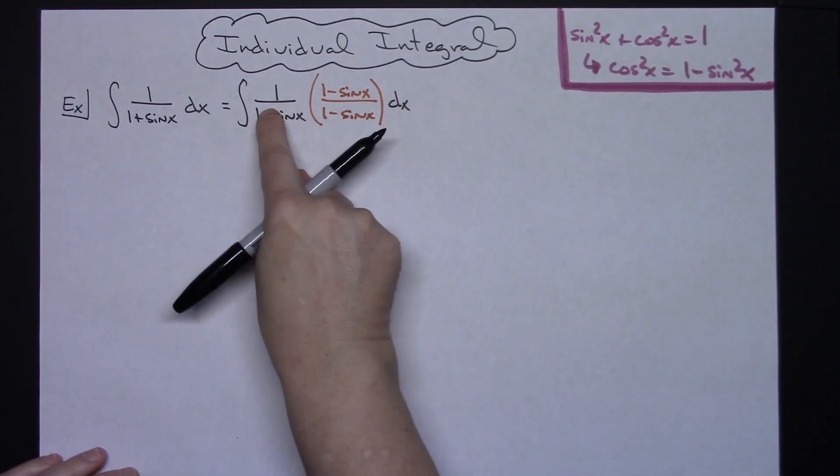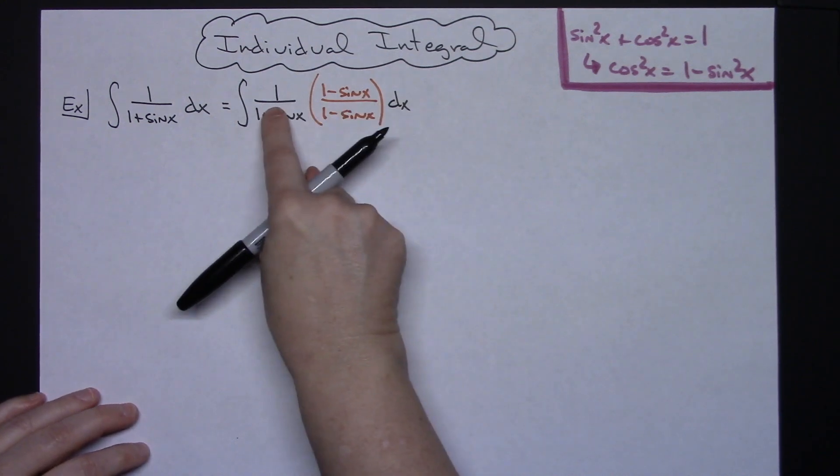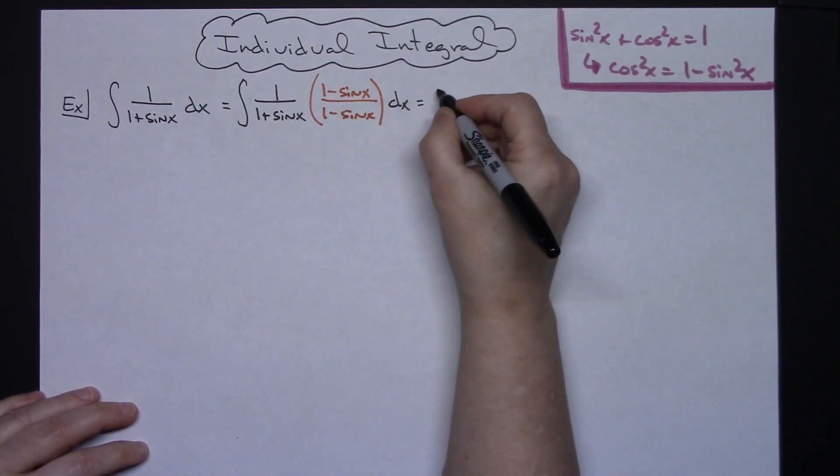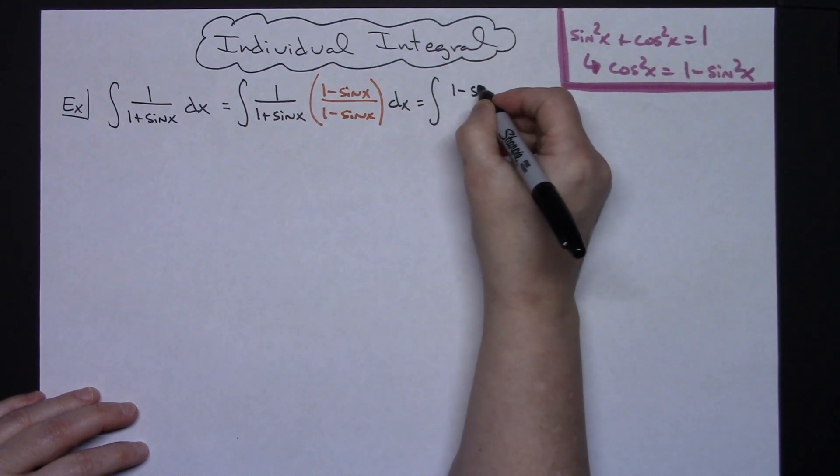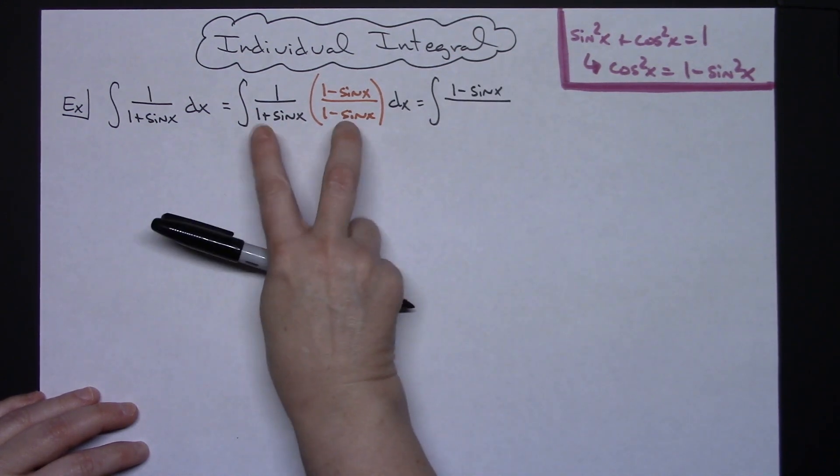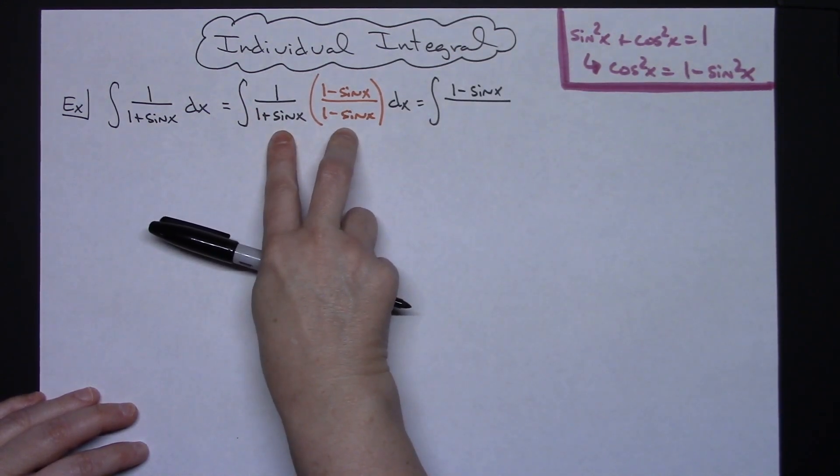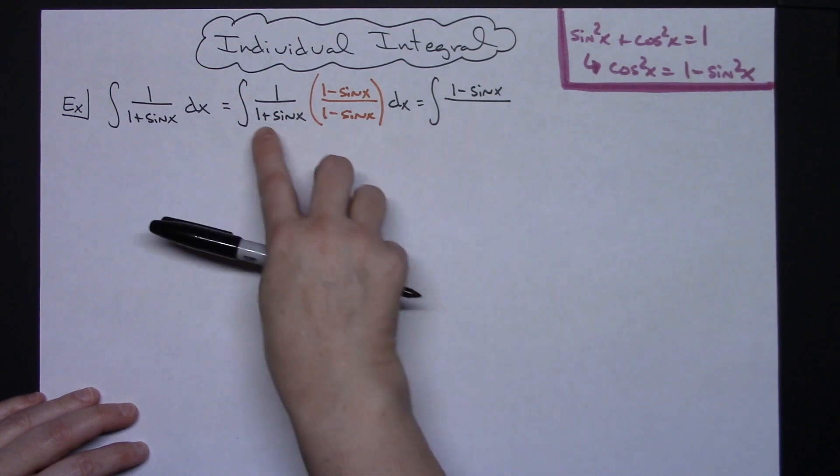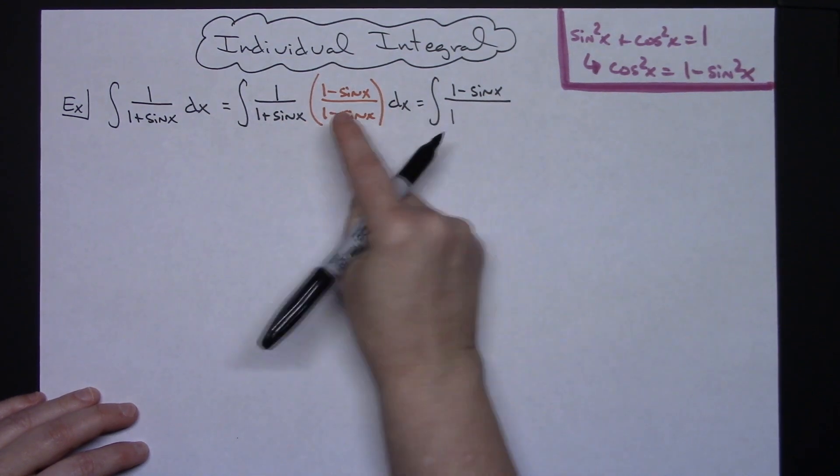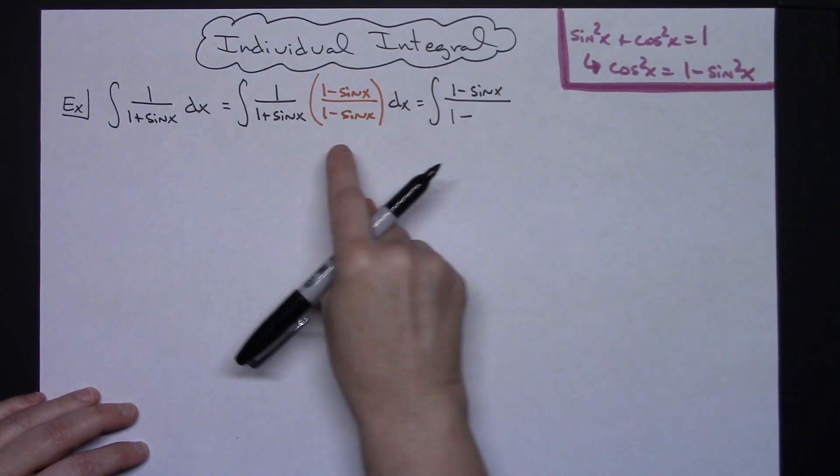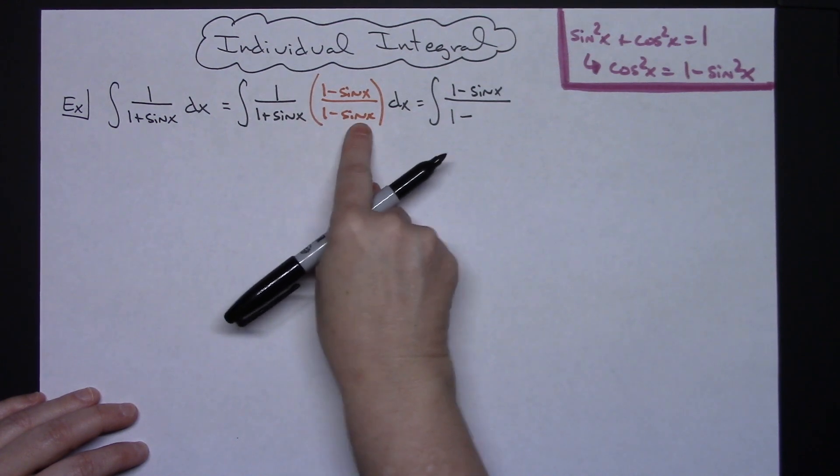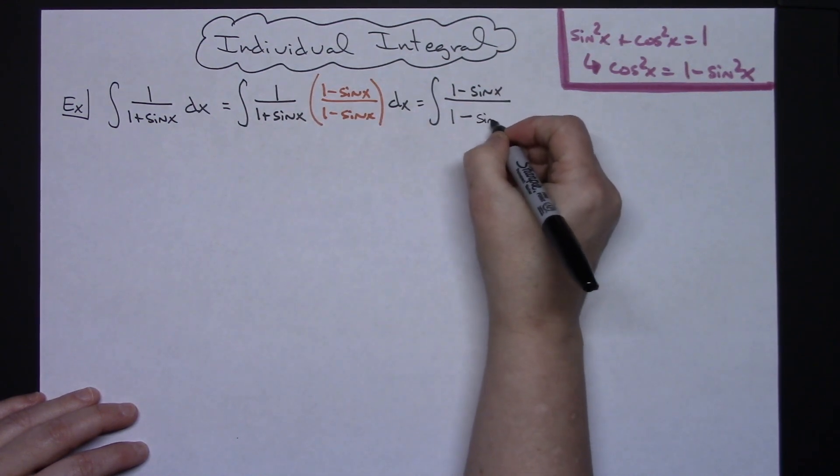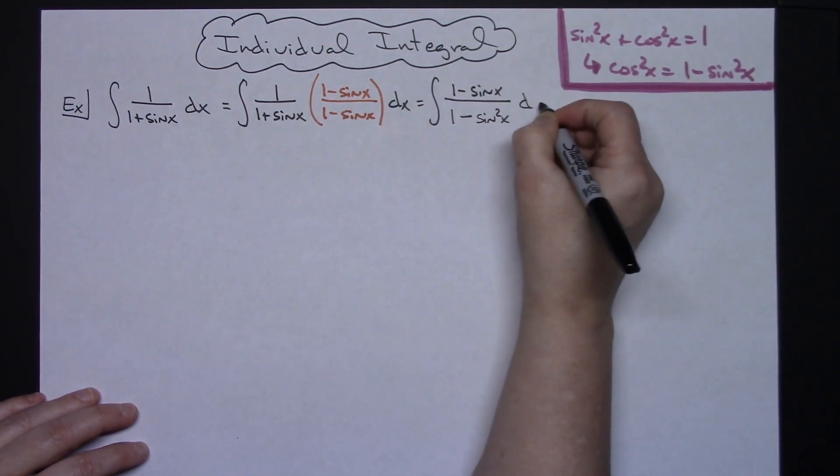Okay now multiplying on top I'm just going to have 1 times that so I'll just have the integral of 1 minus sine x on top. Now by choosing the conjugate here this is the factored form of the difference of two squares so I can multiply that out really easily squaring the first term which is going to be 1 and then minus because I know it's the difference of two squares squaring the second term then I'll have the sine squared x dx.